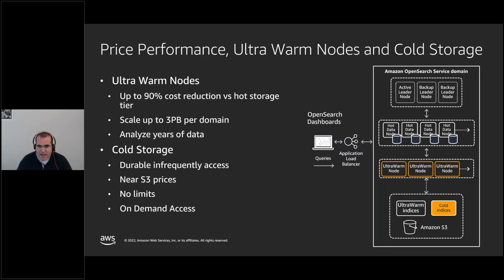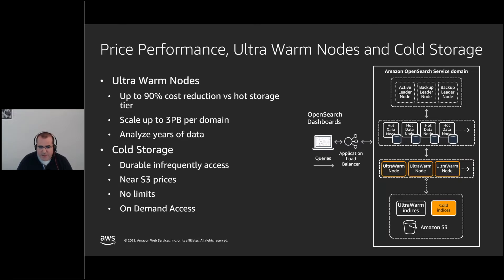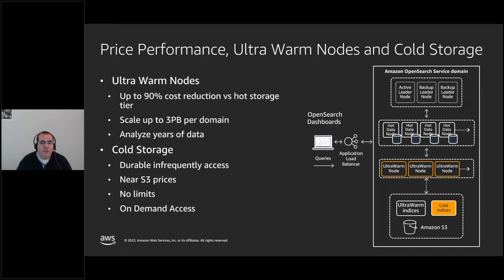UltraWarm still has the 3 petabyte limitation and has less query performance compared to hot nodes, but it's transparent for your application and users who see only a very small decrease in performance. The most common use case is for historical data rarely accessed — for example, data older than five years — giving you that 90% cost reduction. Cold storage uses S3 infrequent access, so data is only available on demand and is not transparent to the user; you'd need to move it to UltraWarm or hot storage if you need to write.